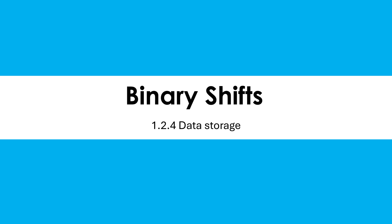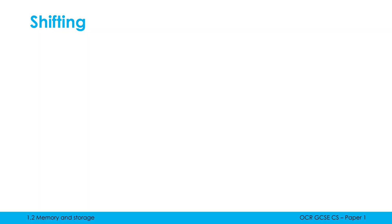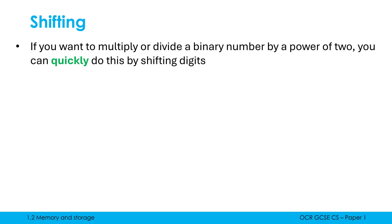Hello, let's have a look at what binary shifting means and what it's used for. If we want to multiply or divide a binary number by a power of two, we can do this really quickly by shifting digits.